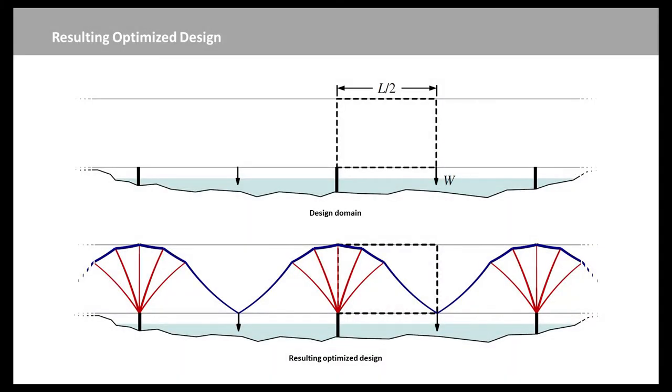Here, we can see a simplified multi-span bridge problem with point load applied at the center of each span. The highlighted half span can be modeled due to symmetry. The modified layout optimization procedure can be used to identify theoretical optimal forms for very long span bridges.